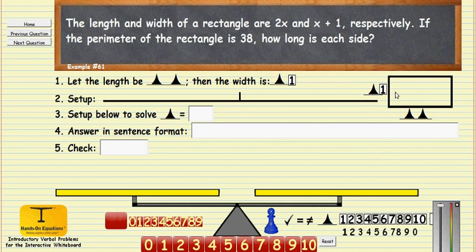So instead of adding up all four sides, why don't we add one side, one width, and one length. And that will be half the perimeter.